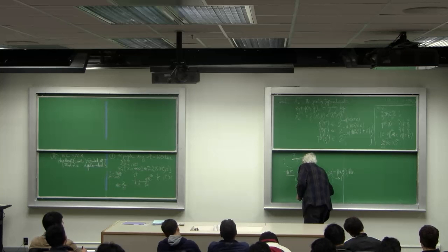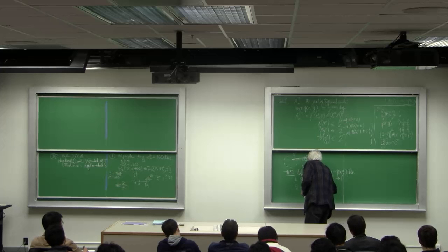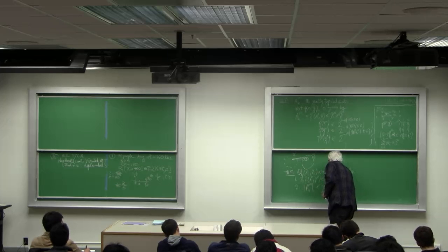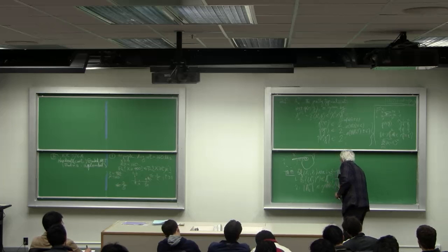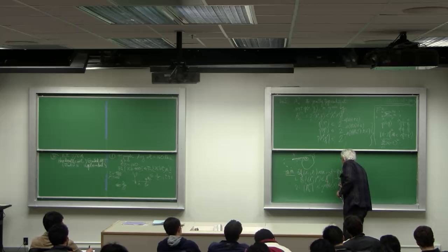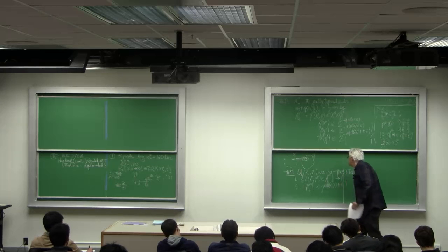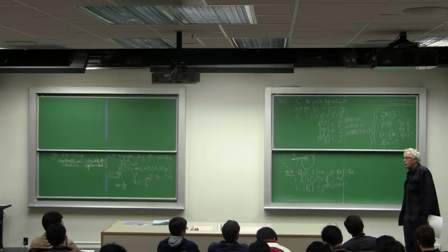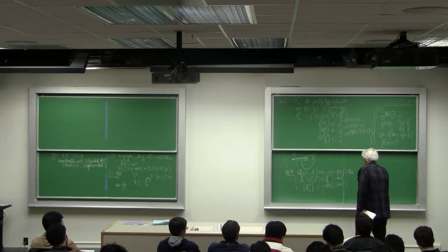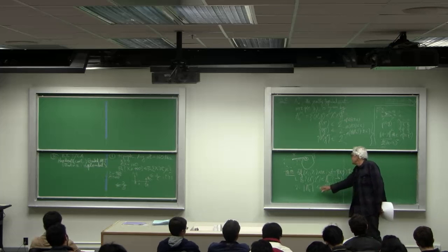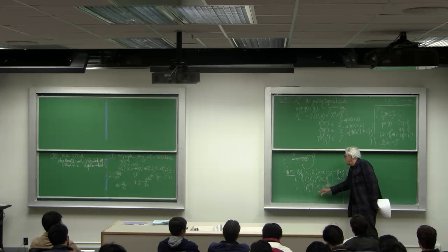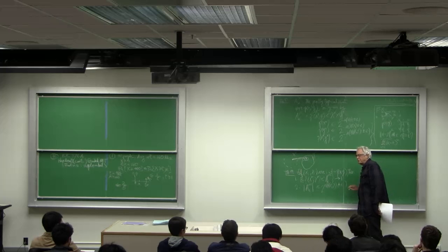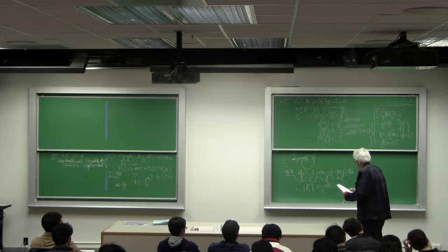Two: the number of jointly typical sequences is less than or equal to 2 to the n h of the entropy of the pair plus epsilon. So there aren't very many jointly typical x y. You can argue and we won't here but it's easy enough that not only is this true but the number of elements is greater than this with a minus epsilon here and a one minus epsilon in front. And three...